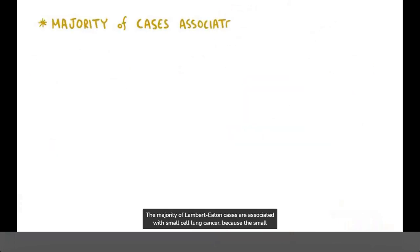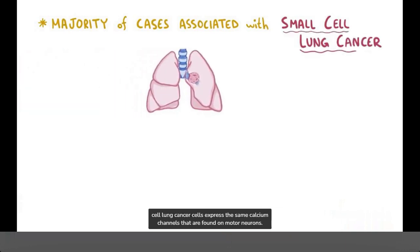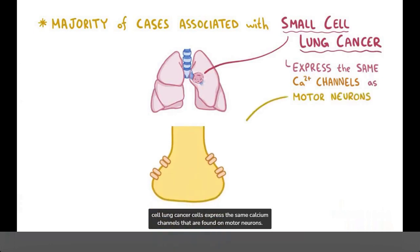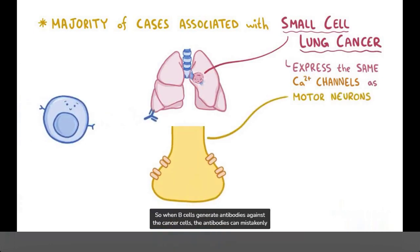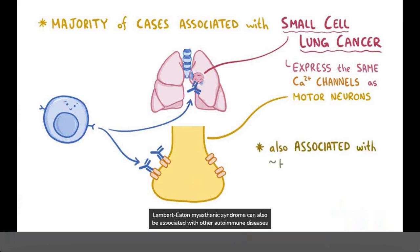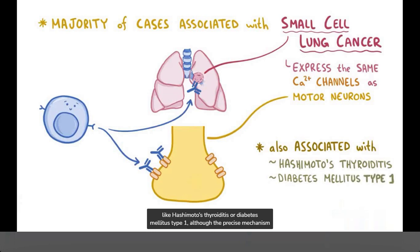The majority of Lambert-Eaton cases are associated with small cell lung cancer, because the small cell lung cancer cells express the same calcium channels that are found on motor neurons. When B cells generate antibodies against the cancer cells, the antibodies can mistakenly attack the voltage-gated calcium channels on the motor neurons. Lambert-Eaton myasthenic syndrome can also be associated with other autoimmune diseases like Hashimoto's thyroiditis or diabetes mellitus type 1, although the precise mechanism is still unclear.